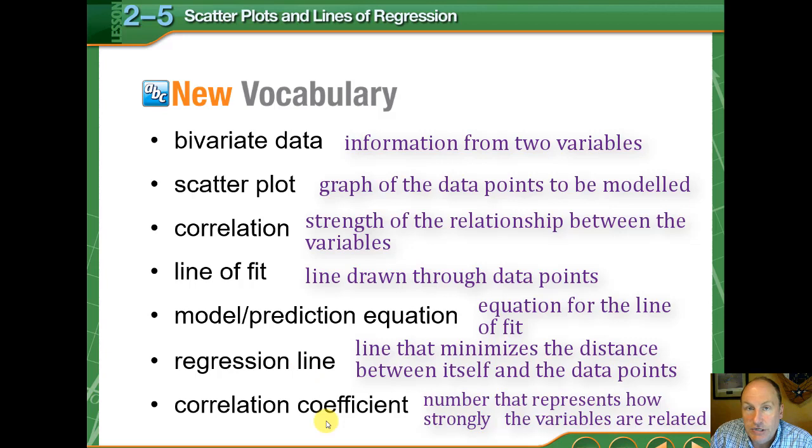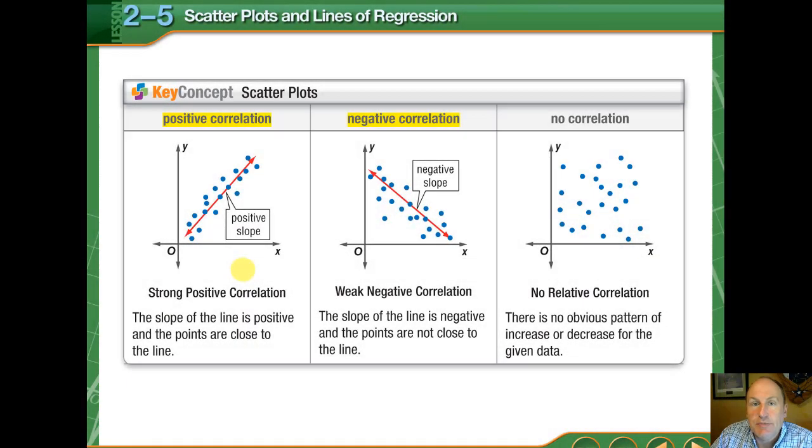Finally, the correlation coefficient is a number between negative one and positive one that represents the strength of how tight the data fits that linear model, that line of fit. Let's take a look at scatter plots and the concept of correlation. How strong is the data related?